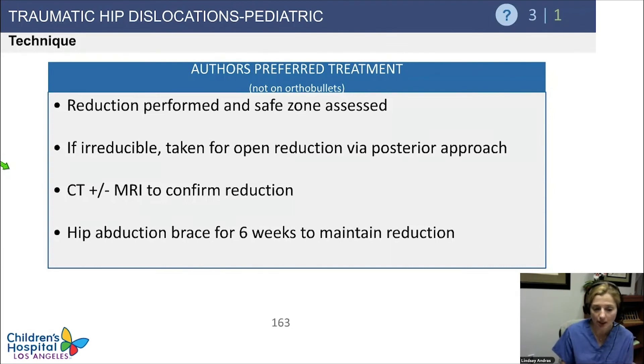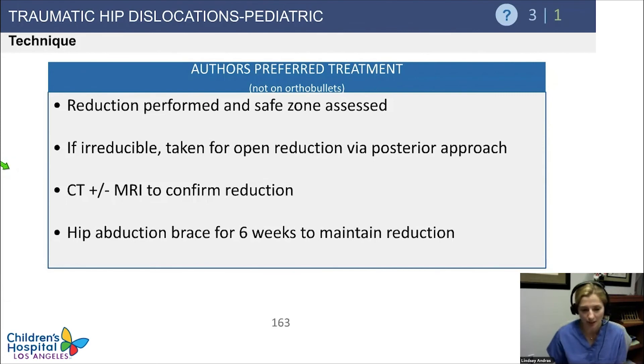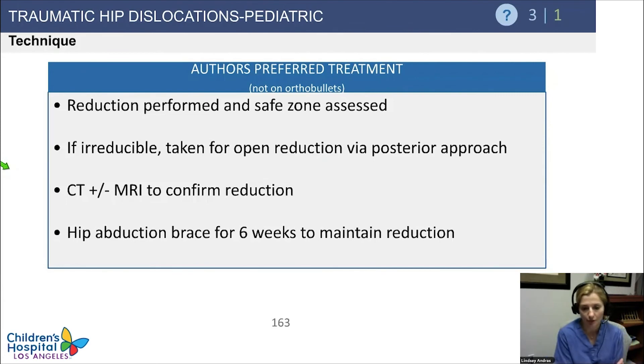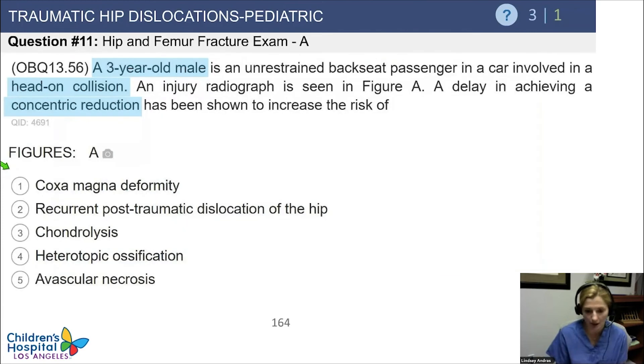We usually apply a hip abduction brace, and most often a spica cast for around six weeks to maintain the reduction.